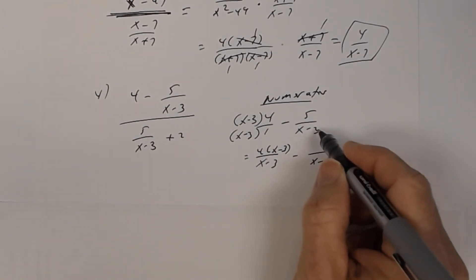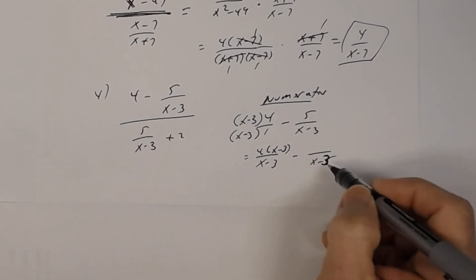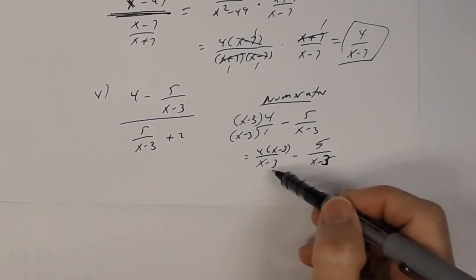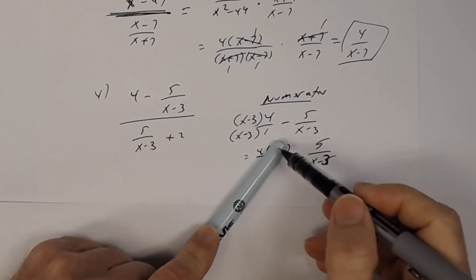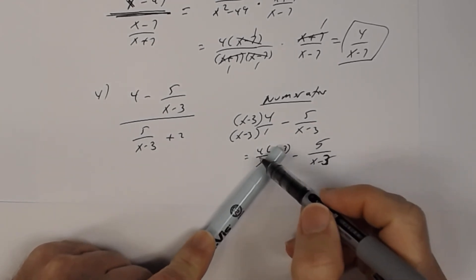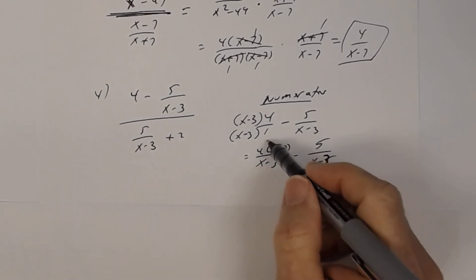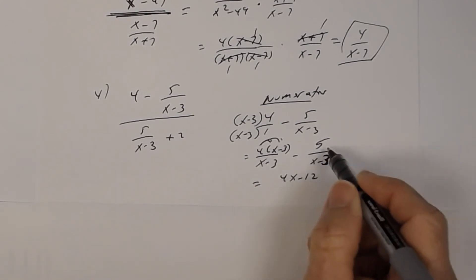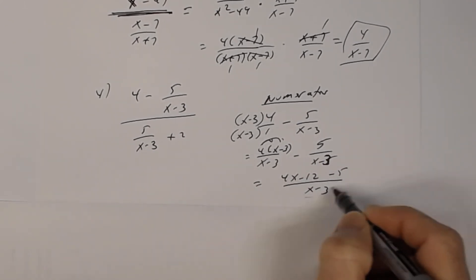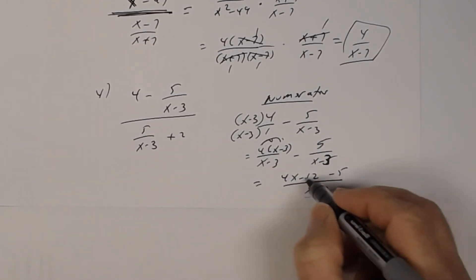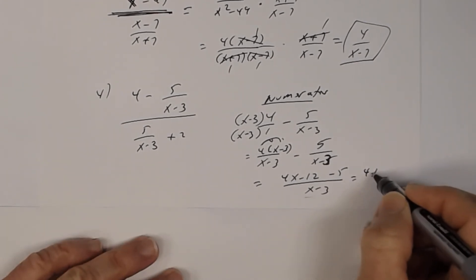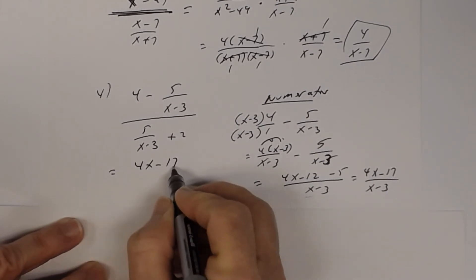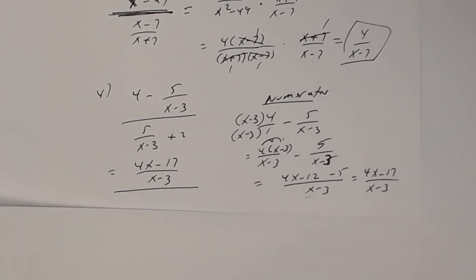To build the LCD, multiply four by x minus three over x minus three to get four times x minus three all over x minus three. The other term, five over x minus three, stays as itself. Distribute to get four x minus twelve. Subtracting five gives four x minus twelve minus five, all divided by x minus three — that is one rational expression. Combining like terms in the numerator gives four x minus seventeen divided by x minus three. That is your numerator.